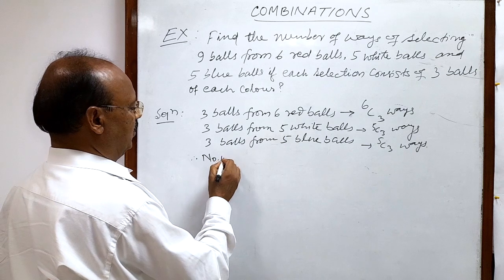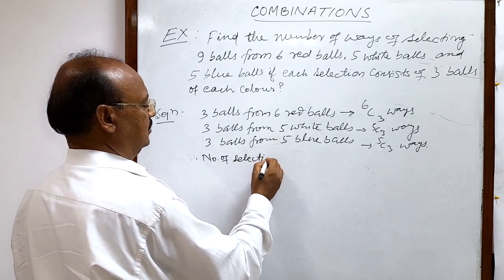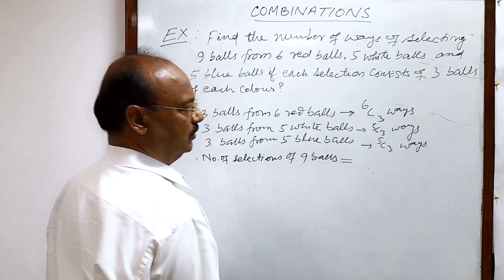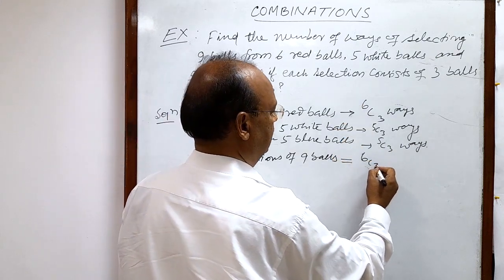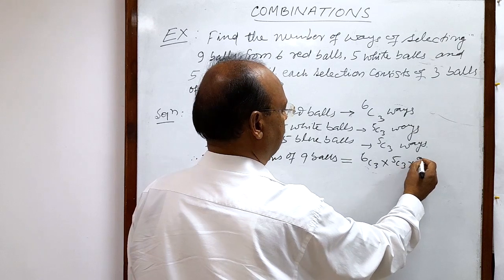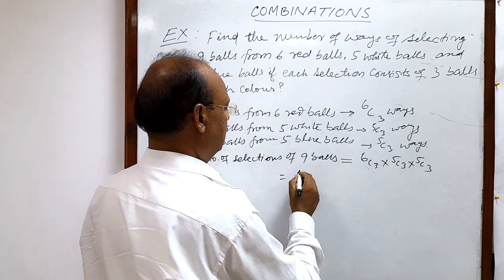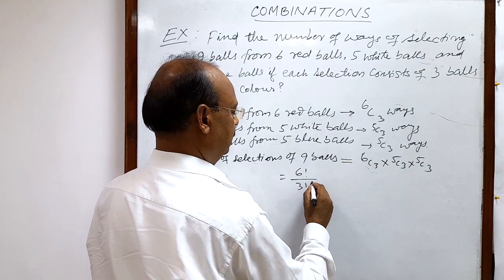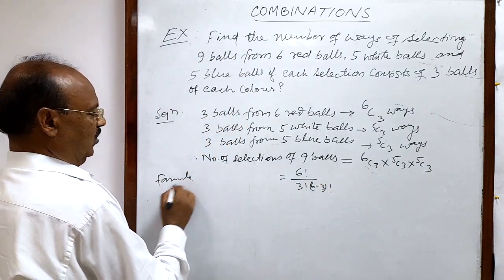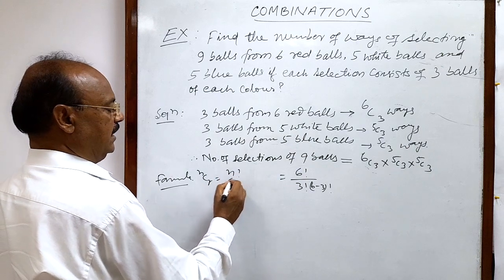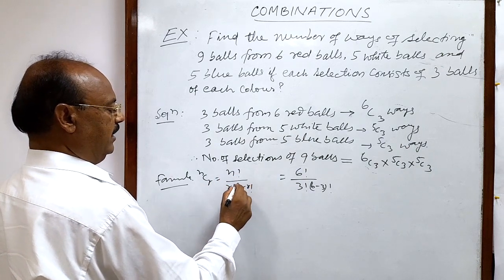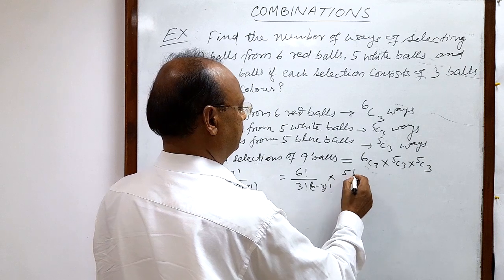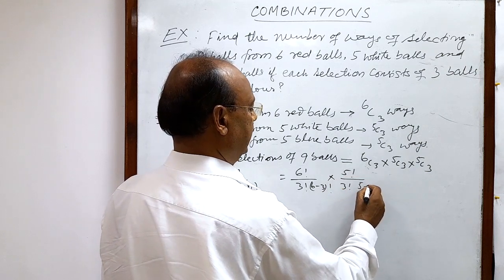Therefore, the total number of selections of 9 balls is equal to 6C3 × 5C3 × 5C3. Now, 6C3 is equal to 6! / (3! × (6−3)!) using the formula NCR = N! / (R! × (N−R)!). So 6C3 can be written as 6! / (3! × 3!), and 5C3 is 5! / (3! × (5−3)!) = 5! / (3! × 2!).